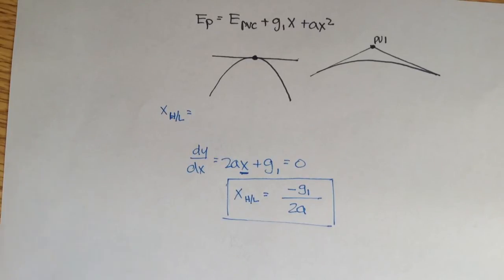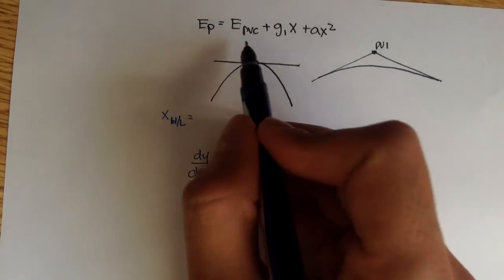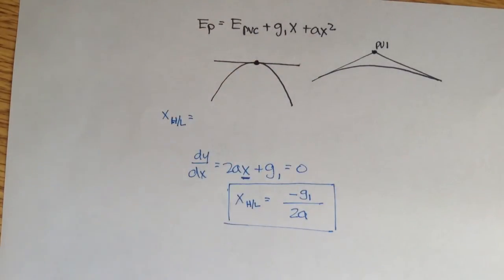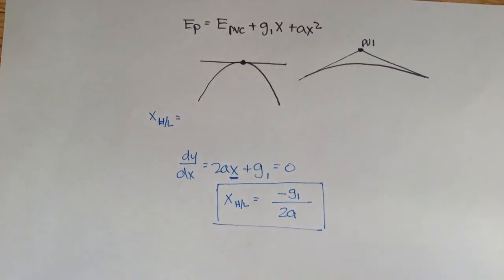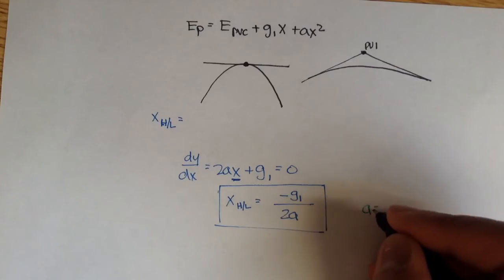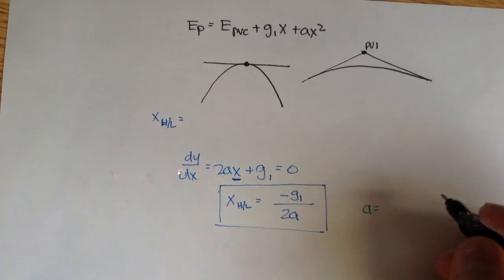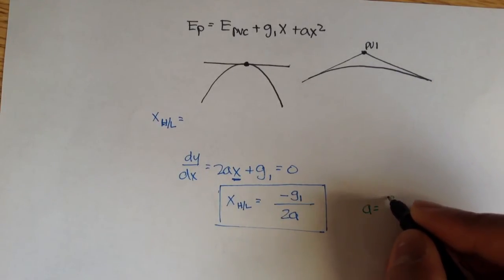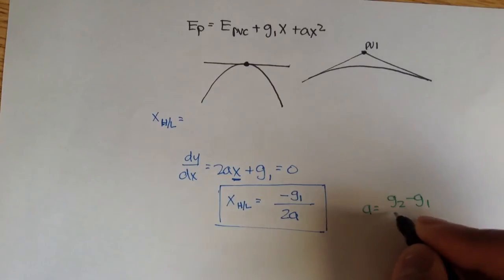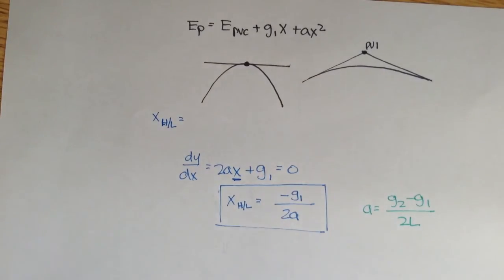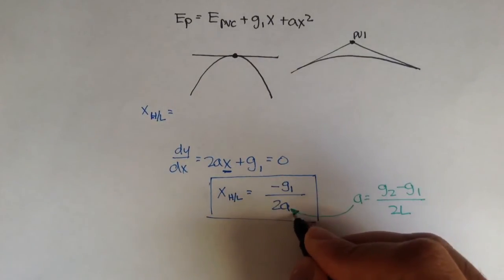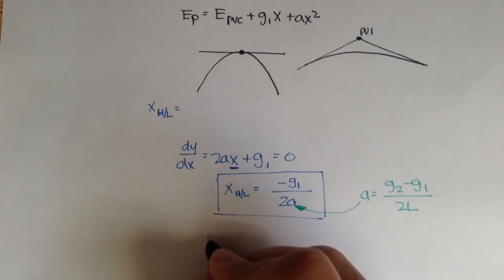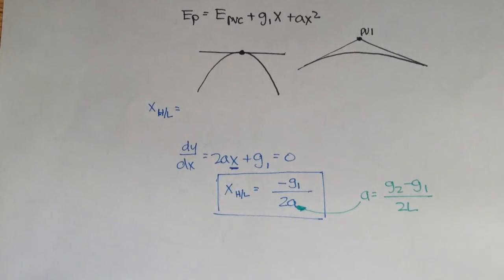And we can use this point and plug it into this equation, and we can find the elevation of the lowest or highest point. And we can actually change this equation just a little bit. We know from our previous video that a is equal to g2 minus g1 over 2 times the length of the curve. So if I plug this in here,